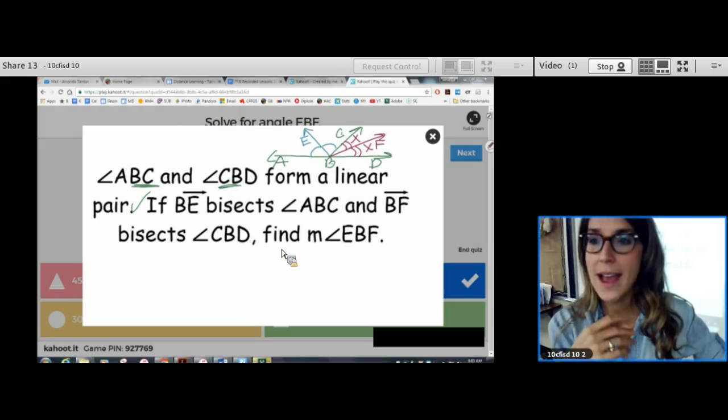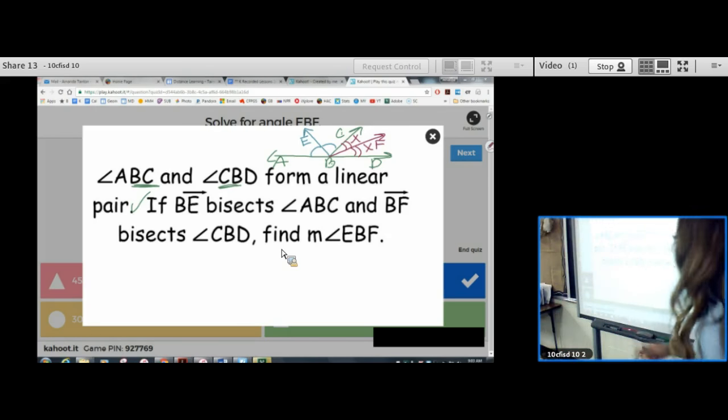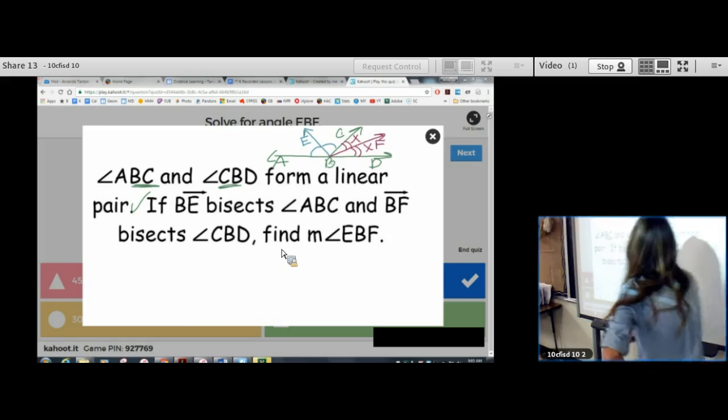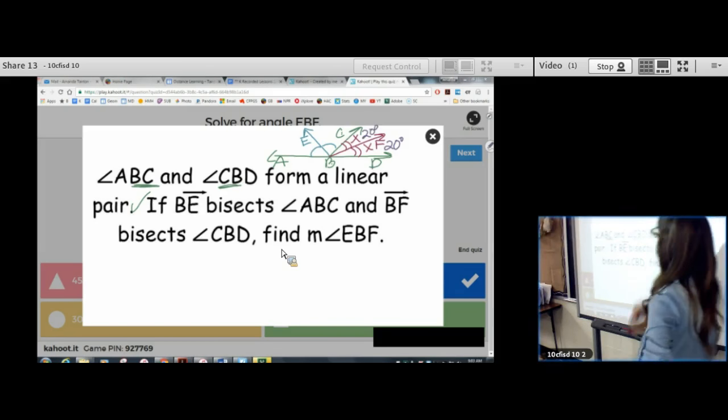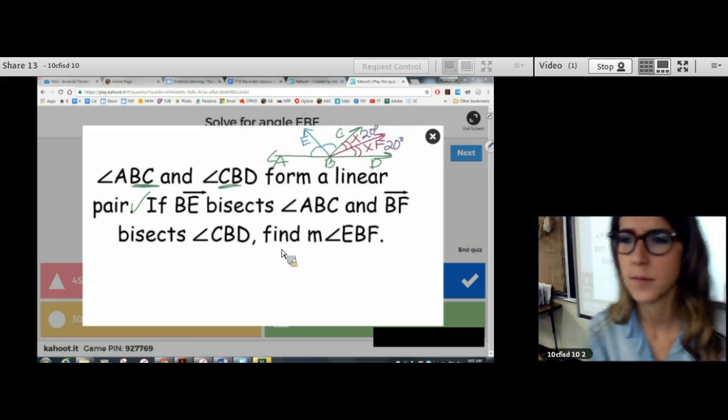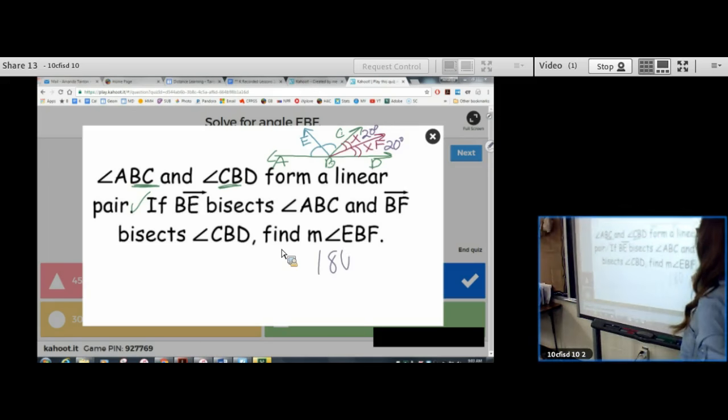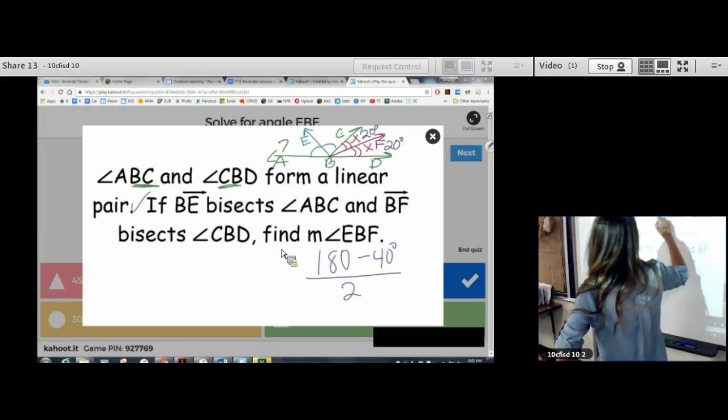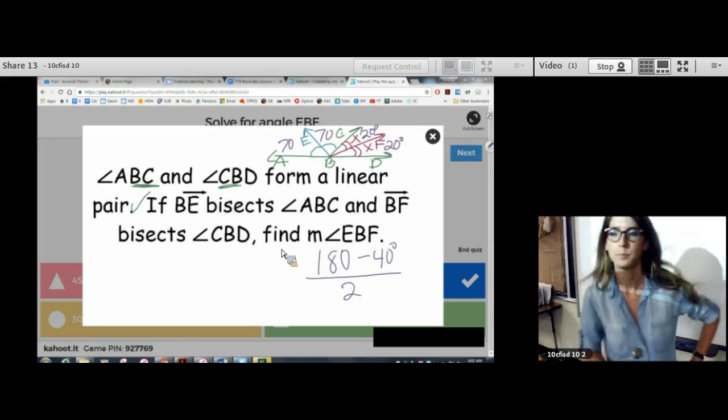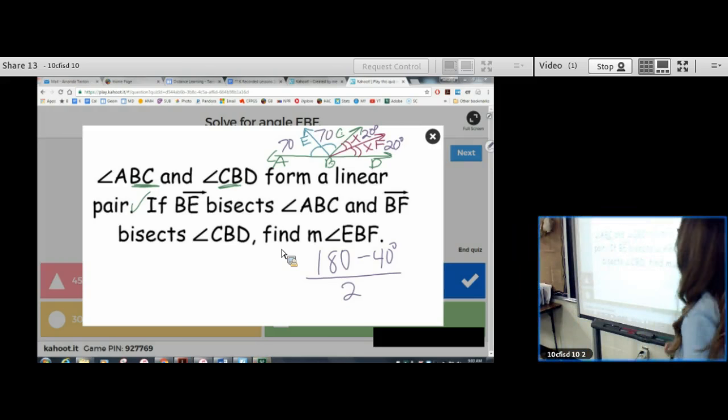What I would do next is make up a number. And, yes, you're allowed to make up a number. Because, we weren't given any number. So, I'll make up, I'll try 20 degrees. That angle is 20. And, that angle is 20. And, could you find those other two angles? 180 minus, how many have we used? 40. And, then, 140 divided by 2. So, that would be 140 divided by 2. That would be 70. So, what's the measure of angle EDF?